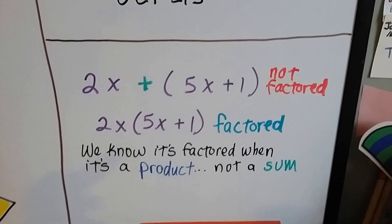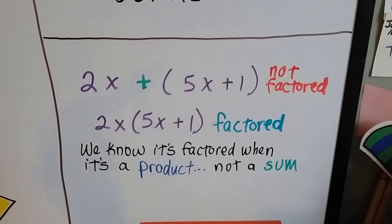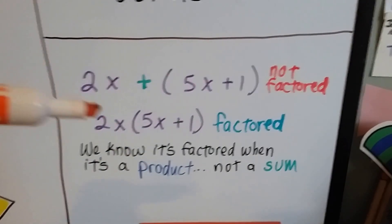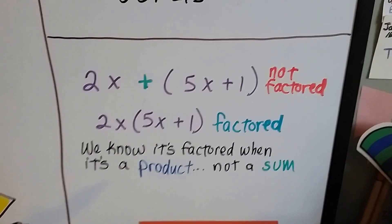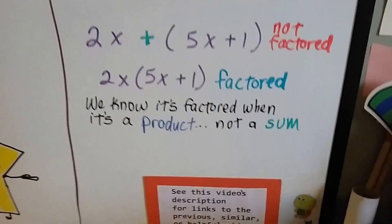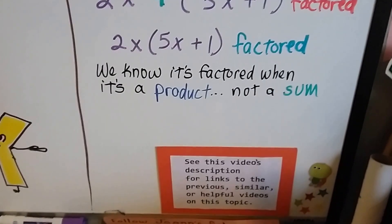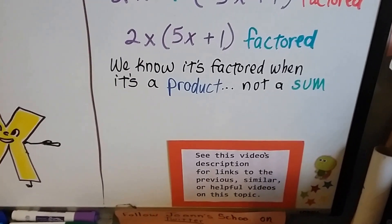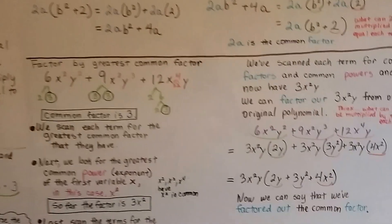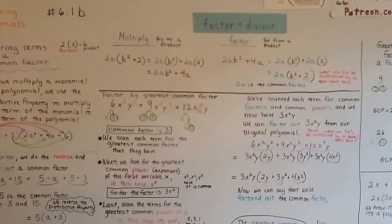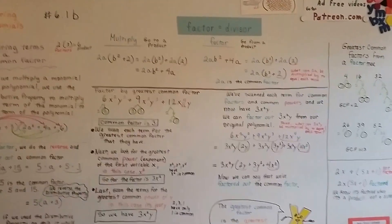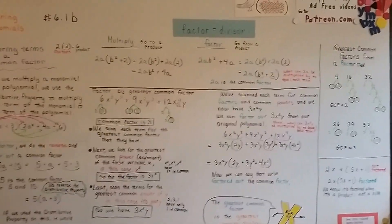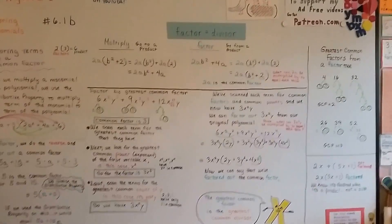You know when it's not factored when you see a plus sign or a minus sign. It's got to be right up against the parentheses — then it's factored. We know it's factored when it's a product, not a sum or a difference. If you need some extra help, try looking in the description for links to previous, similar, or helpful videos on this topic. Our next video is going to be polynomials that are relatively prime — 6.1c. See you there!